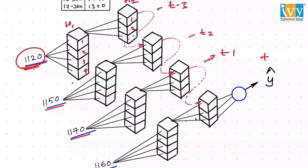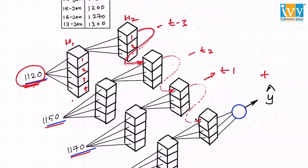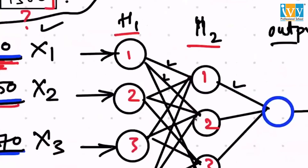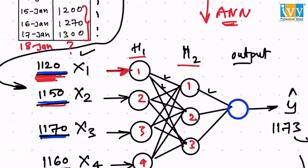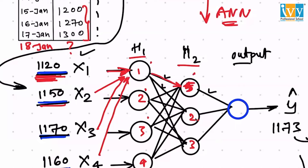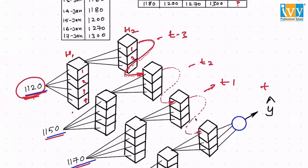I pass one value to the whole network, get an output, and then pass that output as an additional input to each one of the neurons. Normal neurons receive inputs like x1, x2, x3, x4, produce a result, and pass it to the next layer — neuron one doesn't know what neuron two is doing, they all act independently. Also, a neuron does not know what it did in the previous time step.